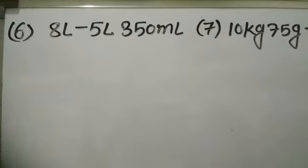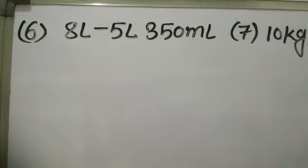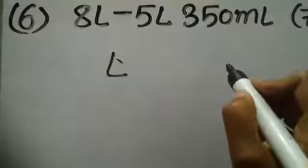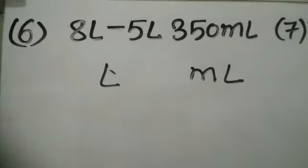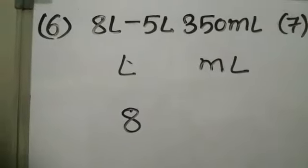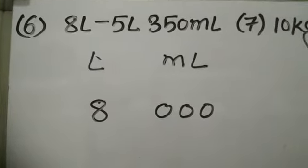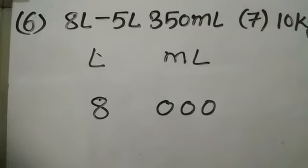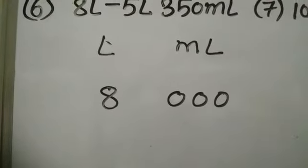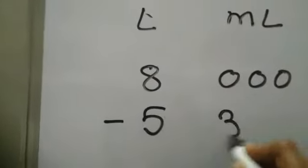Now let us take the 6th example. It is given 8 liter minus 5 liter 350 milliliter. Now here the units used are liter and milliliter, so here I am making 2 columns. The first is of liter and the second is of milliliter. Now what is given — 8 liter, so 8 I am writing in the first column. Now there is no milliliter, so here I am writing 0, 0, 0. Why 3 times 0? Because we know that 1 liter is equal to 1000 milliliter, therefore the number should come in 3 digits while writing in milliliter. Then minus 5 liter 350 milliliter.